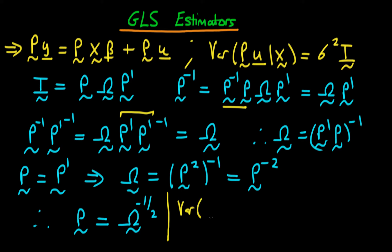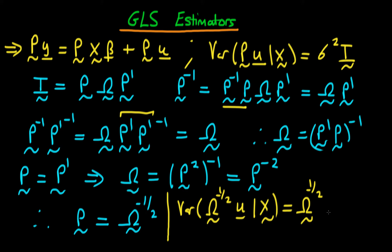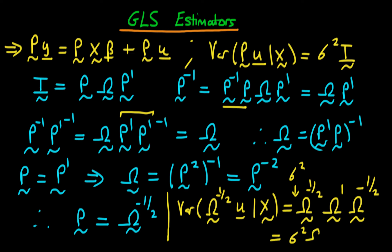The variance of P times U — where P is omega to the power minus one half — times U given X, using our standard formula, equals omega to the power minus one half times the variance of U given X, which we know is sigma squared times omega. This gives sigma squared times omega to the minus one half, times omega to the one, times omega to the minus one half — since omega to the minus one half is symmetric, it equals its own transpose — yielding sigma squared times omega to the power zero, which is sigma squared times the identity matrix.